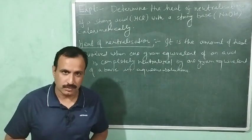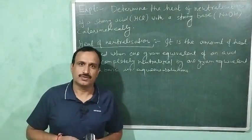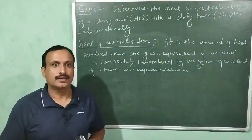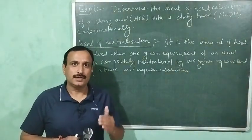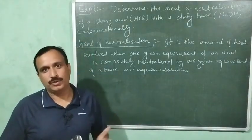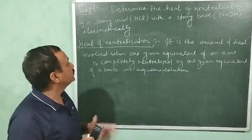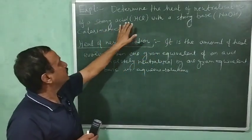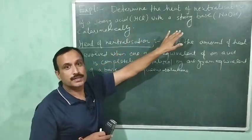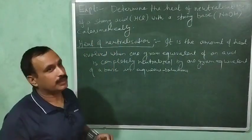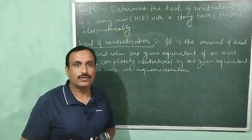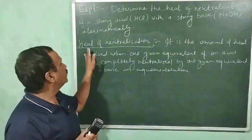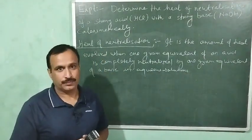Hello everyone, welcome back to DMG Chemistry Classes. In today's video I am going to explain another experiment related to thermochemistry or calorimetry. The experiment is: determine the heat of neutralization of a strong acid HCl with a strong base NaOH calorimetrically. Before discussing this experiment, let us quickly recapitulate what is heat of neutralization.